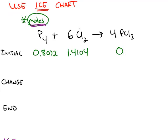Because I know that chlorine is my limiting reactant, if the reaction goes to completion, at the end, my limiting reactant has to go to 0. So if I started at 1.4104 moles of chlorine, the change is equal and opposite, negative 1.4104. That's the only way I'm going to end up with 0 chlorine.